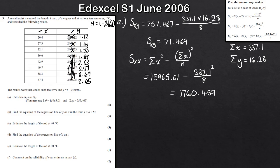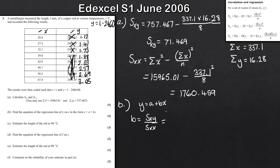That's part a done, giving five marks. For part b, we want the equation of the regression line of y on x in the form y equals a plus bx. Using b equals S_xy divided by S_xx, that's 71.469 divided by 1,760.459. Plugging into the calculator gives b equals 0.041.